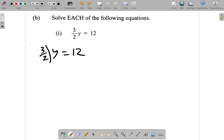Let's treat the 3 over 2 as one number, just like we would with a whole number. If we have 3 over 2 y equals 12 and we want y equal, then we need to get rid of the 3 over 2.